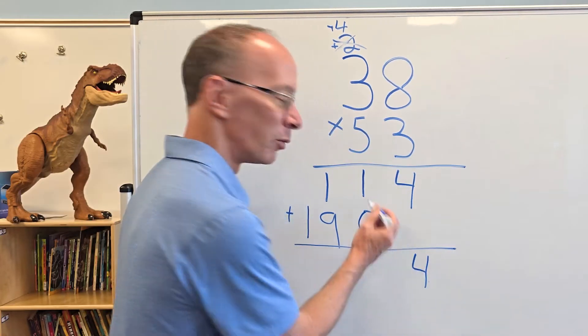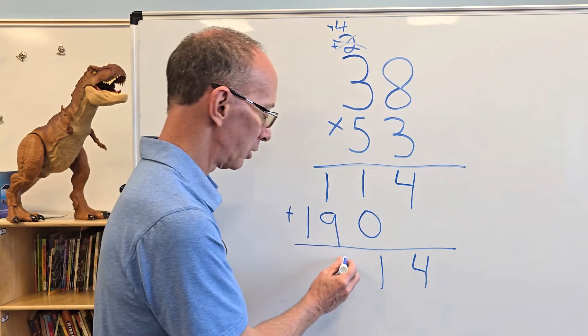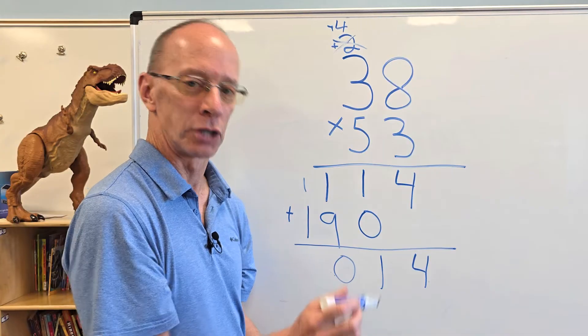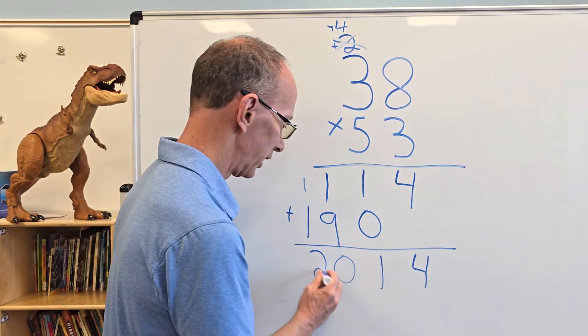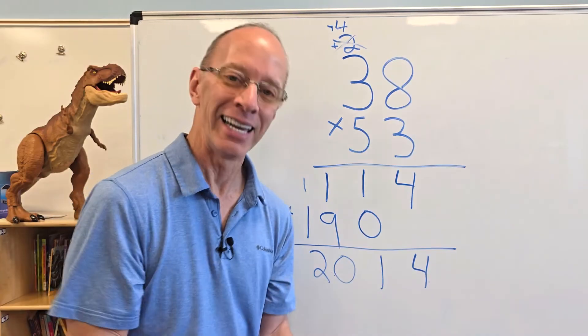9 plus 1, 10. So I put the 0 here, carry the 1. And 1 and 1 is 2. There's our answer, 2014. That was a good year.